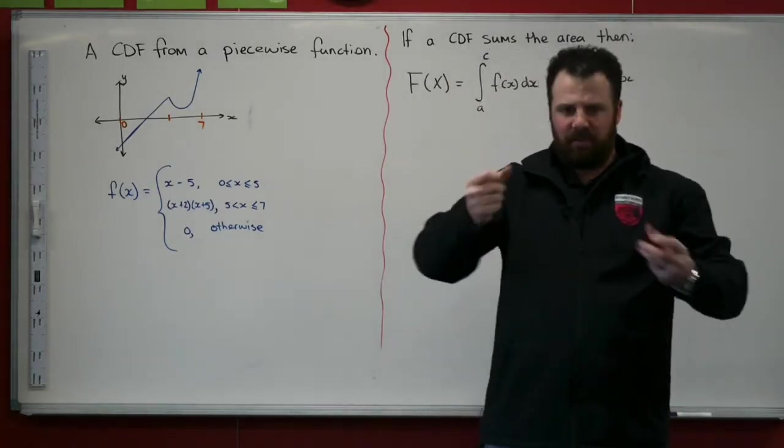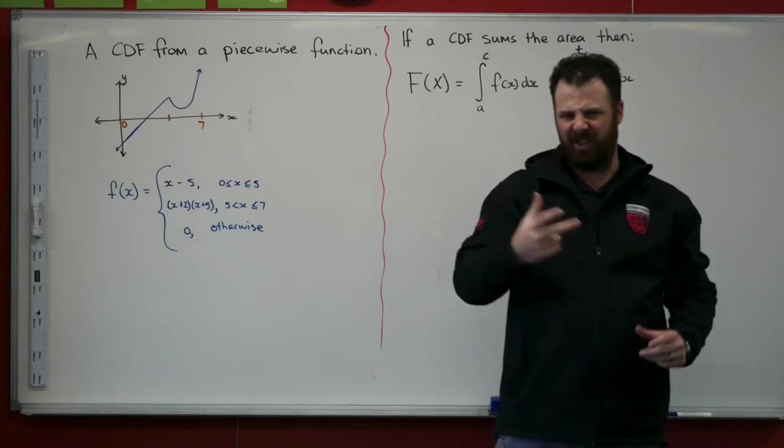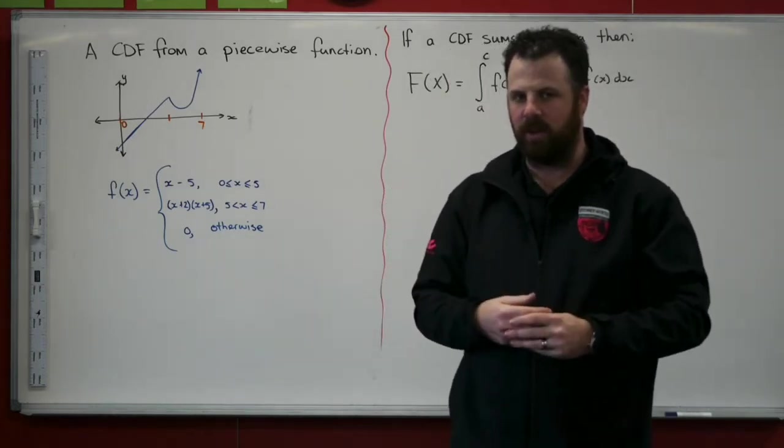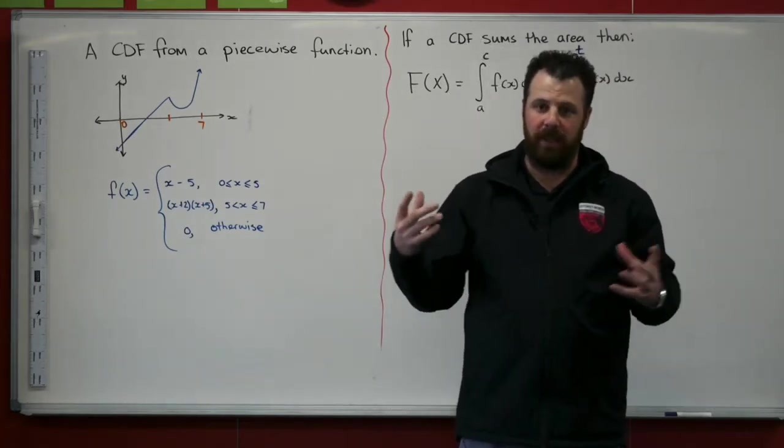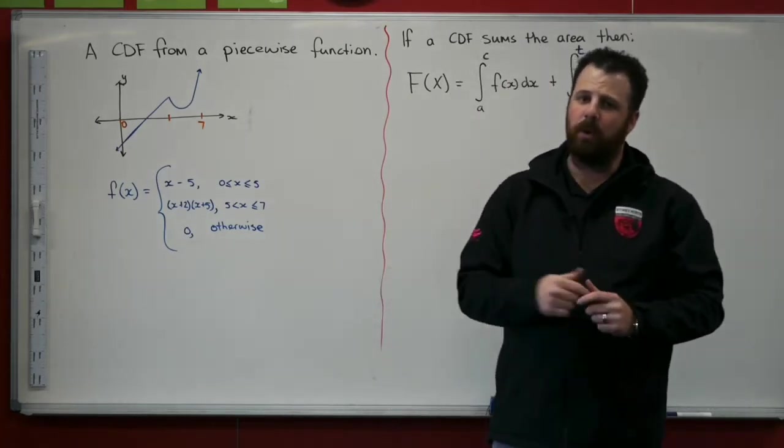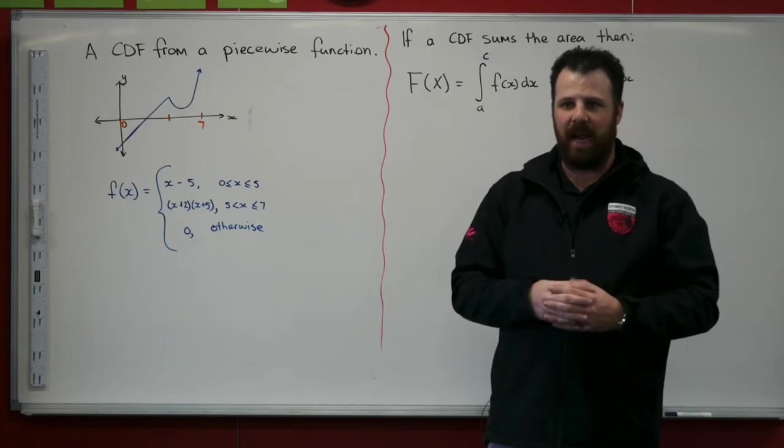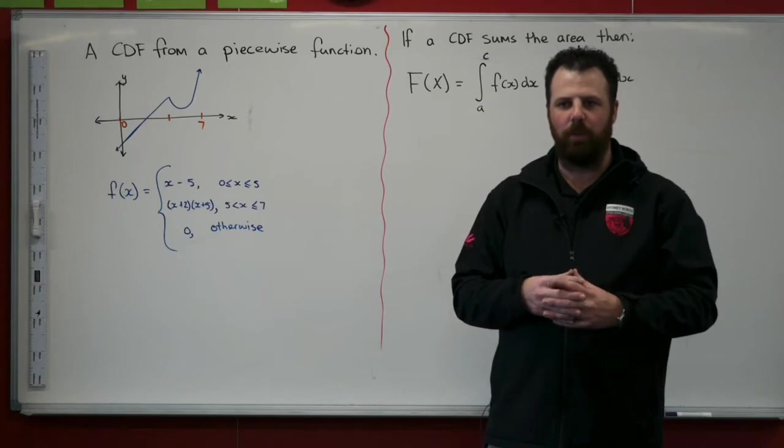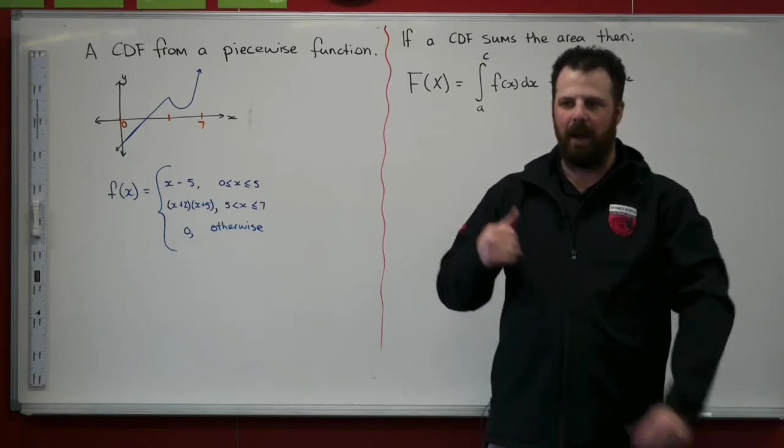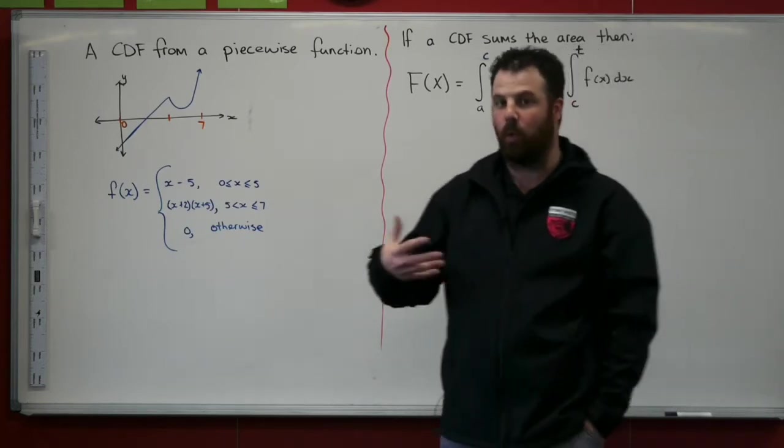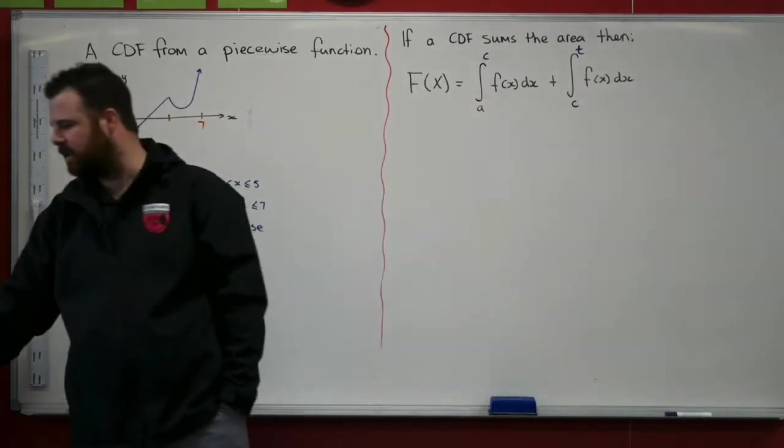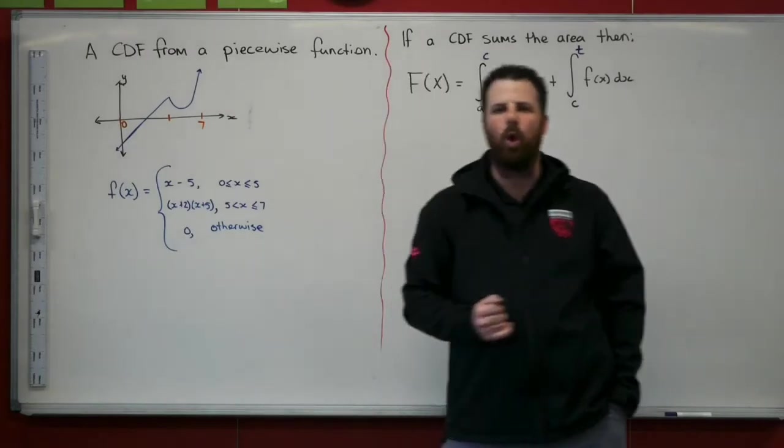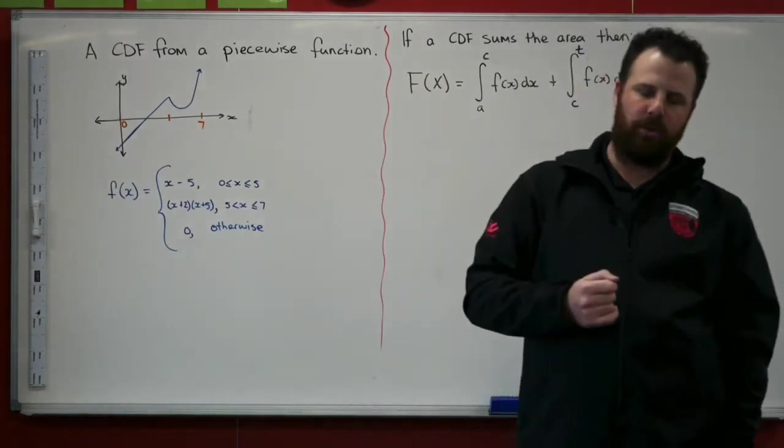But what happens if the function that we are given isn't a straightforward function? What happens if that function was a piecewise function? So we're going to quickly run through an example from the workbook. It is a bit of a stretch of what we could ask you, but it's well inside the scope. It's really going to push your understanding.